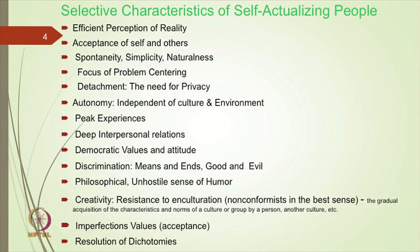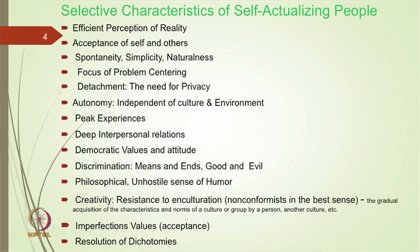For self-actualization, basic needs should be fulfilled and self-esteem should be present. Self-actualizing people have certain selected characteristics: efficient perception of reality, acceptance of self and others, spontaneity, simplicity, naturalness, focus on problem-centering, detachment, need for privacy, autonomy and independence from culture and environment, peak experiences, deep interpersonal relations, democratic values and attitude, discrimination between means and ends and good and evil, philosophical unhostile sense of humor, creativity, and resolution of dichotomies. These 15 characteristics identified by Maslow will be revisited in the character strengths chapter.